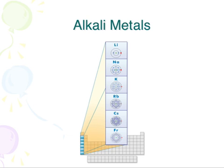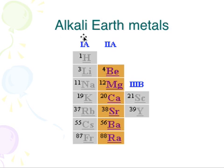The first family I'm going to talk about is the alkali metals — these are group number one. If you say it, hear it, and see it, you learn a lot faster. Group number one: the alkali metals. Group number two are known as the alkaline earth metals. So group one is the alkali metals, and group two is the alkaline earth metals.